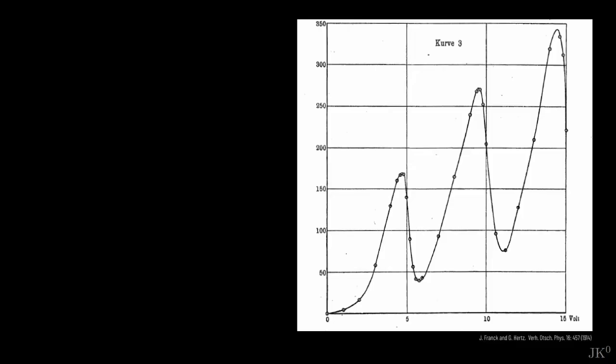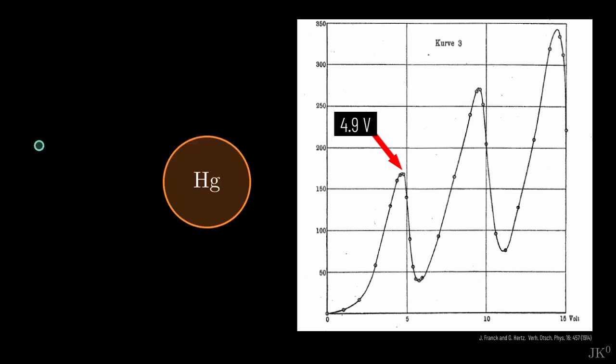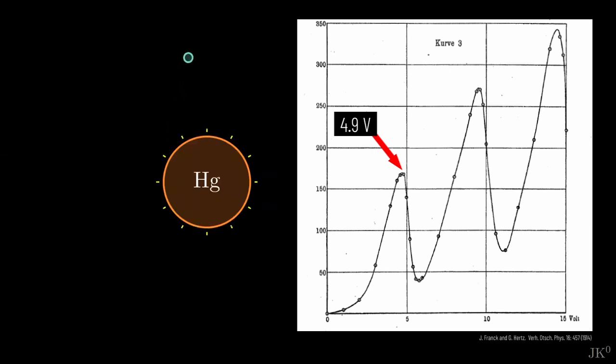To compare, this is a plot reported by Franck and Hertz in 1914. When increasing the accelerating voltage from 0 to, say, 4.7 volts, the collisions are elastic, as expected. But something happens around 4.9 volts, when the atoms suddenly accept energy from the electrons.